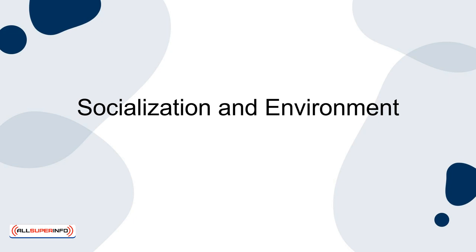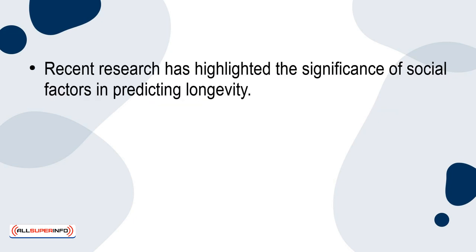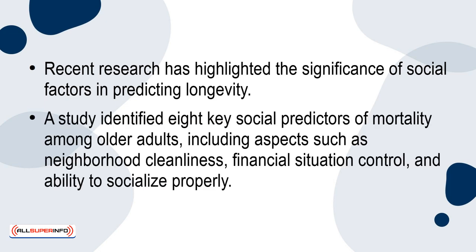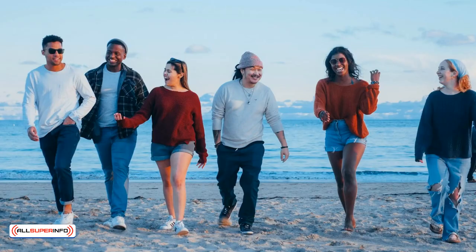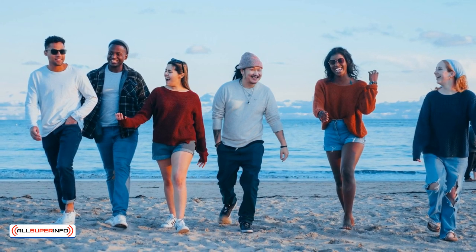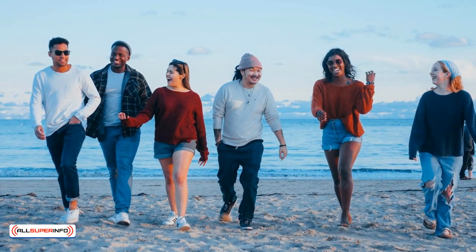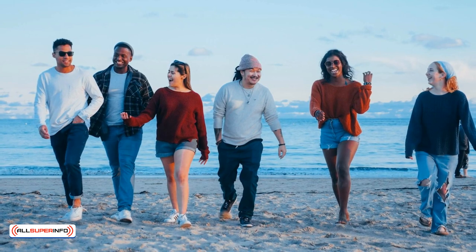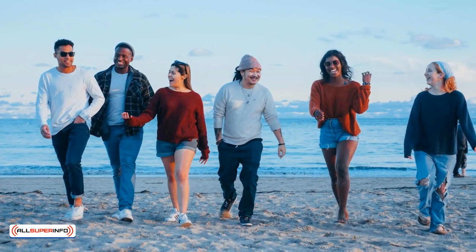Socialisation and environment. Recent research has highlighted the significance of social factors in predicting longevity. A study identified eight key social predictors of mortality among older adults, including aspects such as neighbourhood cleanliness, financial situation, control and ability to socialise properly. This finding emphasises that our social environments and interactions are just as crucial as medical conditions in determining our lifespan.